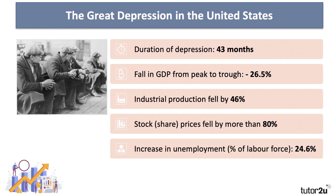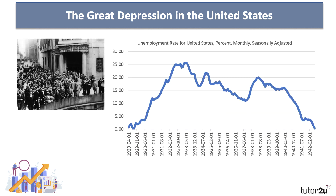Of course, we typically associate mass unemployment with the Great Depression that afflicted the United States in the early 1930s. The Depression itself lasted over 40 months. Output in the economy — the fall in real GDP from peak to trough — was over 25 percent. Industrial production fell by nearly a half. There was a dramatic fall in share prices. And unemployment as a share of the workforce went up to nearly 25 percent, as this chart shows. And it stayed pretty high — indeed, it was still above 10 percent in 1940, before the unemployment rate came down as the American economy moved on to a war footing.